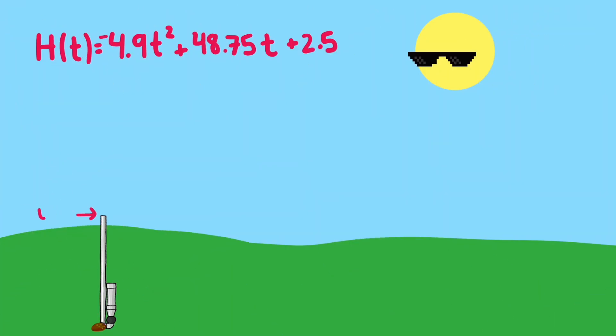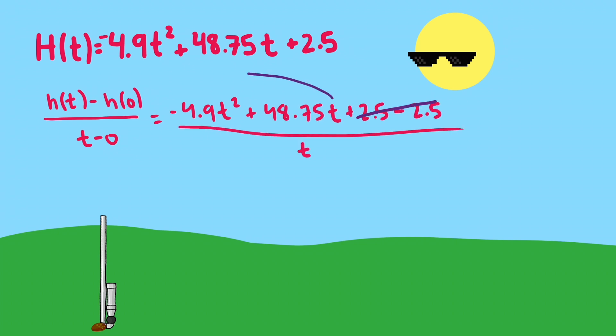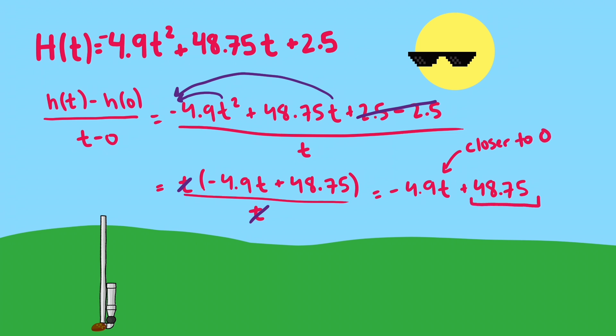To find the exact value, we might pick an interval of 0 length, but this produces mathematical nonsense with 0 divided by 0. So instead, we'll keep trying smaller and smaller intervals, which means smaller and smaller values of t. Notice that if we plug in our equation h of t and h of 0 into our speed formula and simplify, we can divide by t, and what we have left is a negative 4.9t plus 48.75. But as we plug in values really close to 0 for t, then the first expression will get smaller and smaller, basically 0. So all that is left is 48.75.